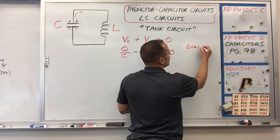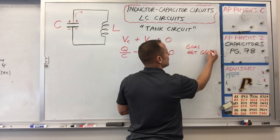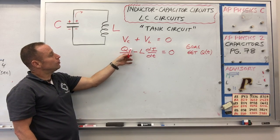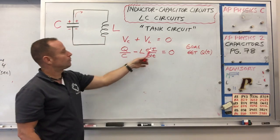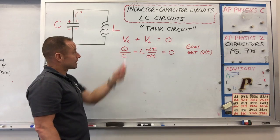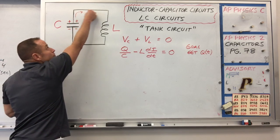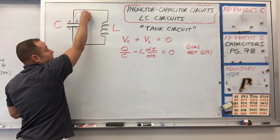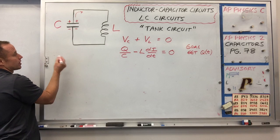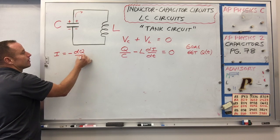Let's set as a goal to get the charge on the capacitor as a function of time, Q of T. We have Q and current as time-dependent variables, so we have two variables right now. It'd be nice to reduce to one. The capacitor is going to lose charge at a certain rate — if it's losing charge at a high rate, that would be like a high current. So the current is just the rate of change of the charge, and we're going to substitute in that current is the rate of change of the charge.